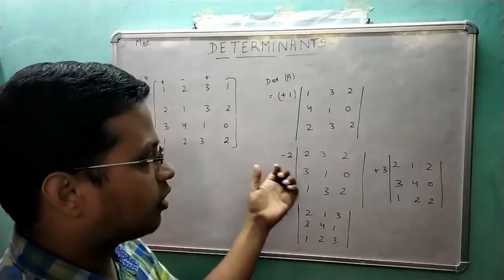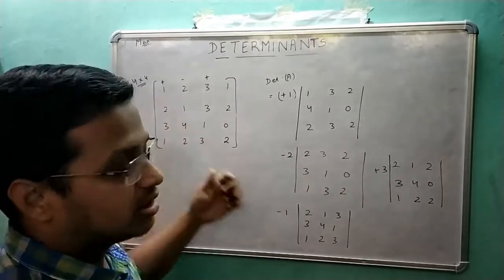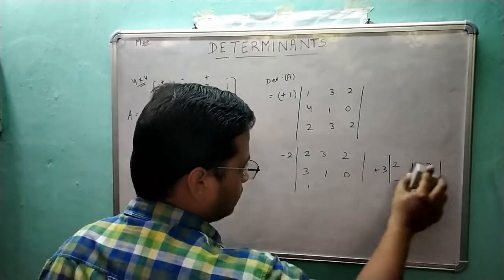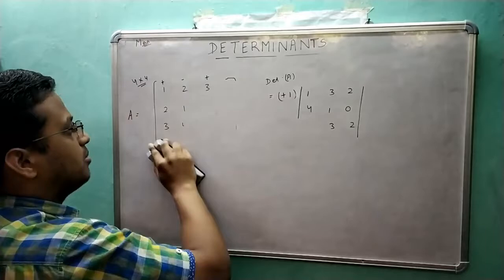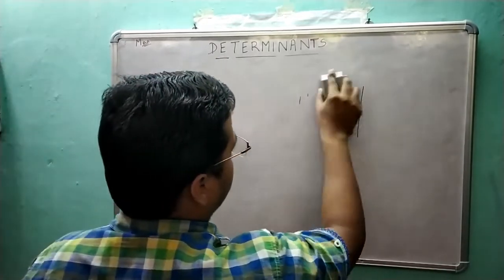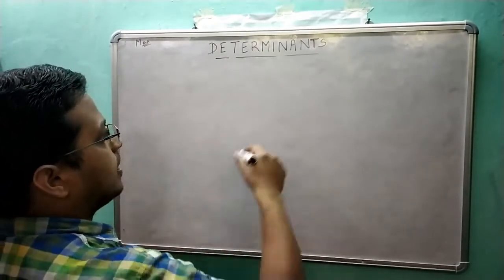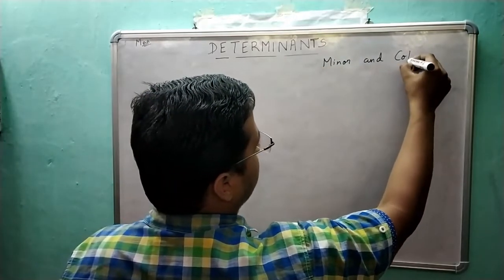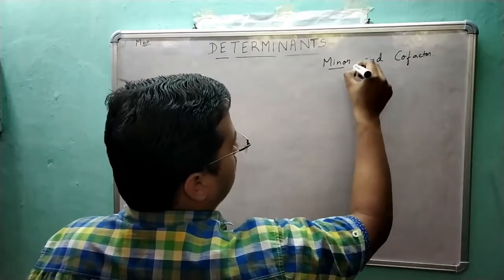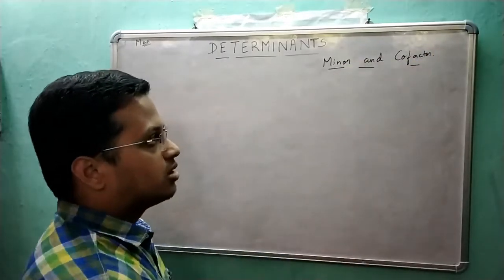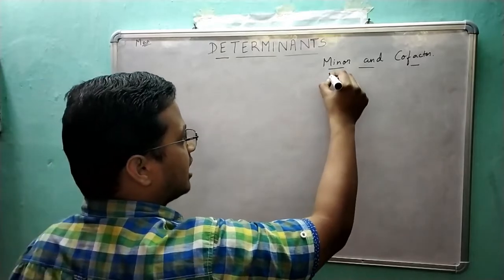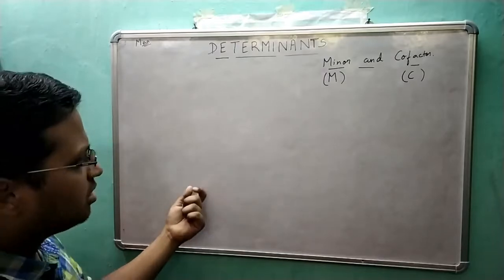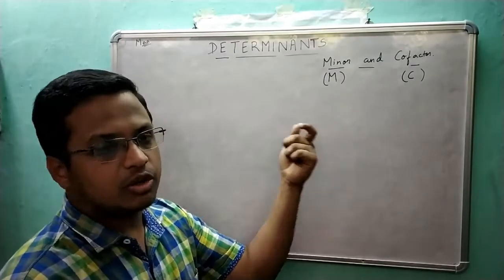This is a general procedure applicable for matrices of all orders. Now, keeping this in mind, let us proceed to minors and co-factors of a matrix. This is a very important topic. Minors are represented as capital M and co-factors will be represented as C. These are just numbers associated with each element of a given matrix.